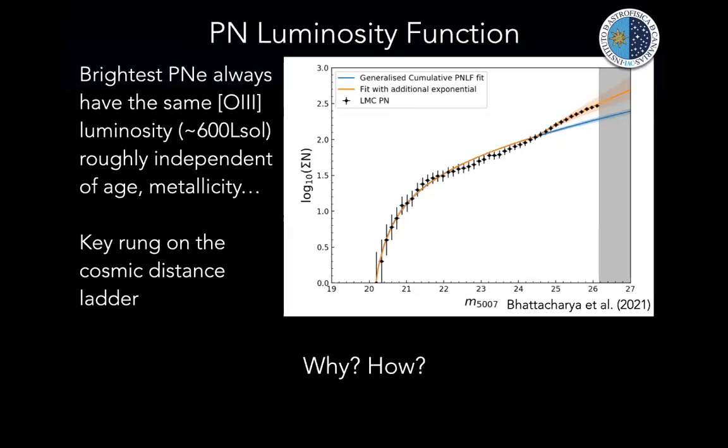Next: the planetary nebula luminosity function. If you look at the cumulative distribution of planetary nebula brightnesses in any population — old, young, high or low metallicity — the brightest planetary nebulae always sit at roughly the same magnitude in the [OIII] 5007 Å emission line, with only a slight metallicity dependence. This makes it usable as a standard candle to determine distances to galaxies within the local group, simply by imaging in [OIII] and identifying the bright cutoff.